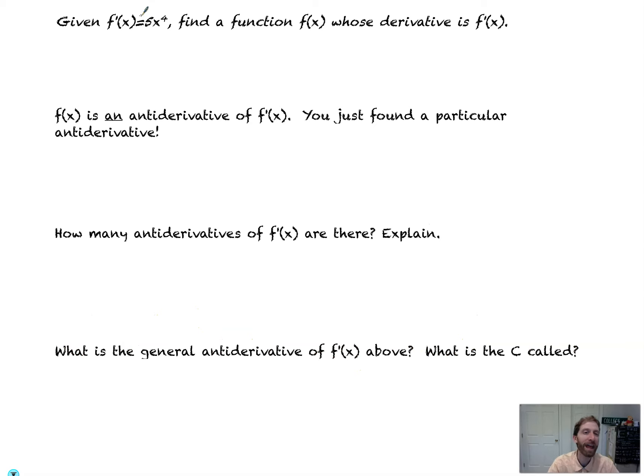So let's jump right into a problem. Given f'(x) = 5x^4, find a function f(x) whose derivative is f'(x). So we're basically saying the derivative of what gives me 5x^4? Well, if I took the derivative of x^5, the derivative of that would be 5x^4. So that is one value for f(x) that would work. You could also technically do like x^5 plus any constant, like plus 9, would work, because the derivative of any constant goes to zero. So what those are called are particular antiderivatives.